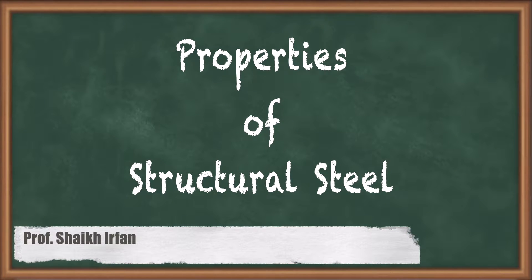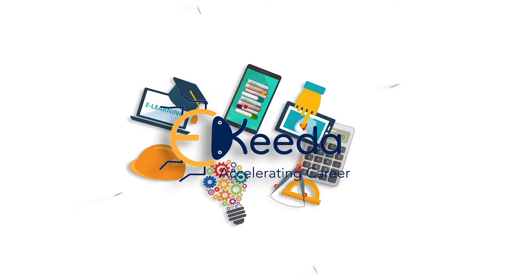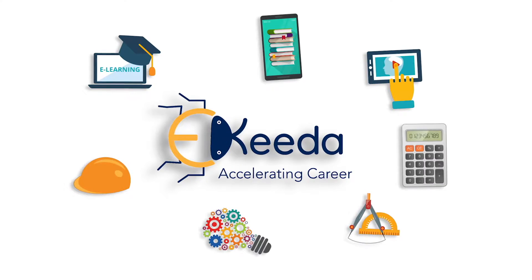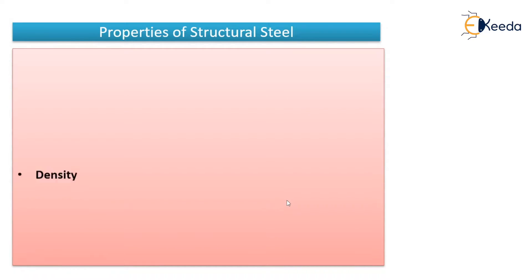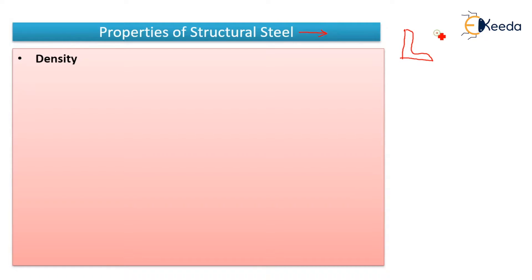Hello everyone, in this video we are going to see properties of structural steel. We have seen what is structural steel - it is a rolled steel section manufactured in steel which has standard shapes and standard sizes like I-section, L-section, angle section, T-section, channel section. Various sections are available which are manufactured in factories and transported to the required construction site, then either welded or bolted. That steel is known as structural steel.